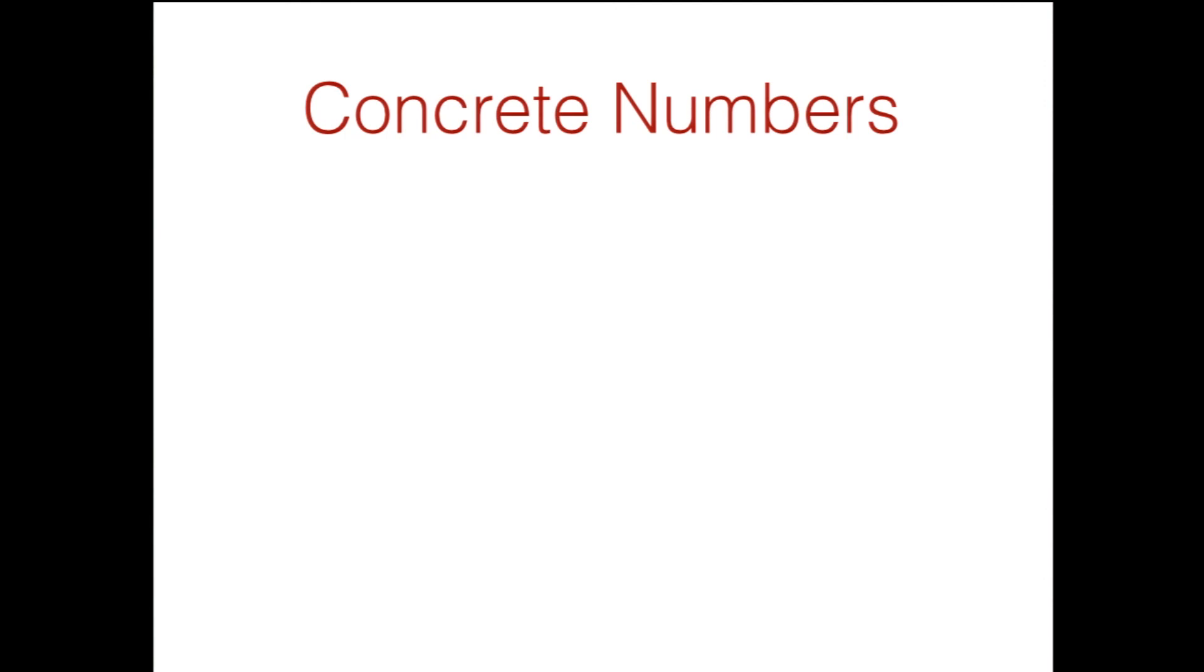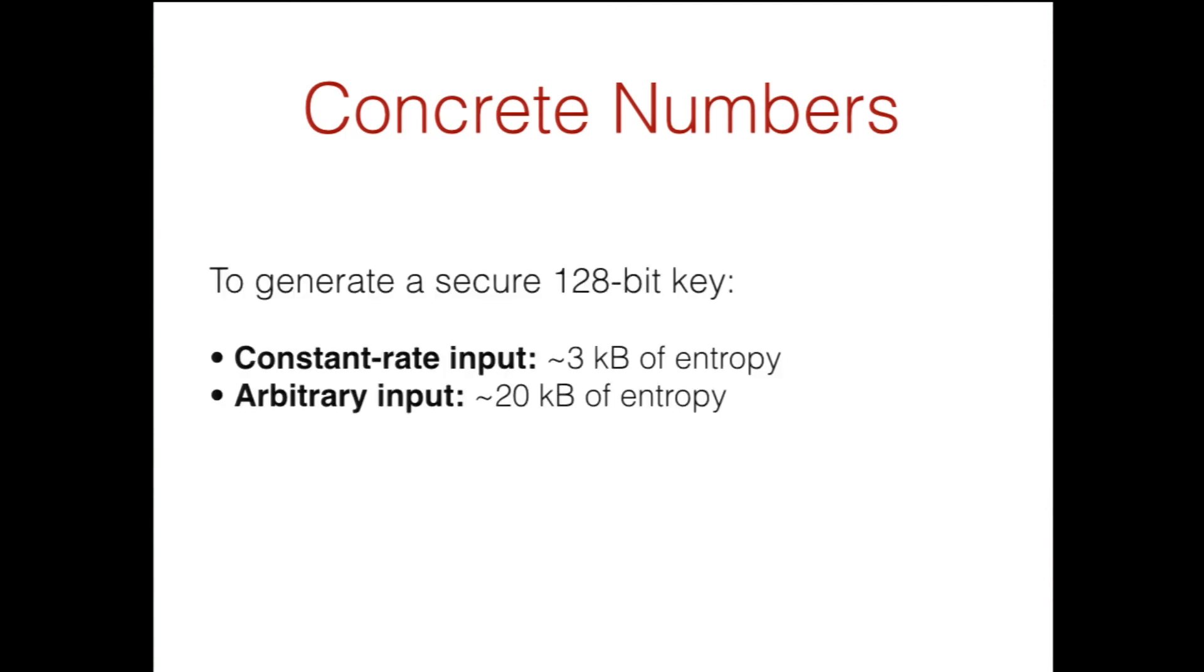So that's the construction. Let me give you some concrete numbers to generate a secure 128-bit key. In the constant rate case, we need three kilobytes of entropy. Not too bad. In the arbitrary case, we need 20 kilobytes of entropy, which I admit is a relatively high price to pay, but we're also solving a hard problem. And in particular, you need not choose between two constructions. These are both achieved by the same construction, so you can just build this. If you happen to live in a relatively benevolent world, you'll get a recovery after three kilobytes. If you happen to live in a very adversarial world, as many of us do, you'll not recover until 20 kilobytes.